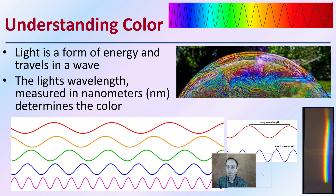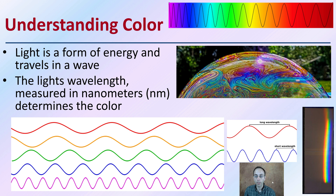First, we have to understand color because we're going to be looking at different wavelengths. Light is a form of energy and travels in a wave. The light's wavelength, measured in nanometers (nm), determines the colors.